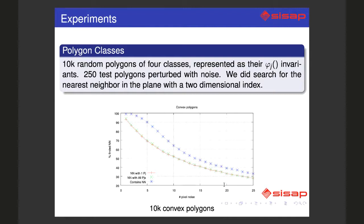We took 250 polygons to test and perturbed each one of them with noise. This is how much noise. And we did search for the nearest neighbor of the polygon in the plane with a two-dimensional index. That's fast because we have logarithmic warranties in low dimensions.